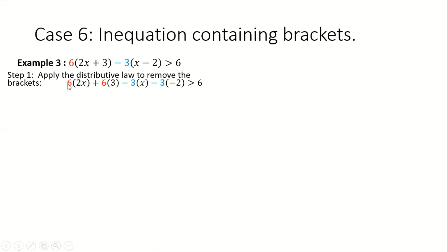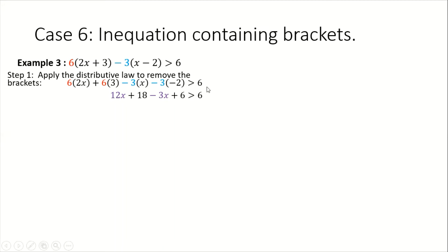That will give us 6 times 2x plus 6 times 3, minus 3 times x minus 3 times negative 2, is greater than 6. Then our next step is to simplify. When we simplify: 6 times 2x gives us 12x; 6 times 3 gives us 18; negative 3 times x gives us negative 3x; and negative 3 times negative 2 gives us positive 6. We put back our inequality symbol and our 6.